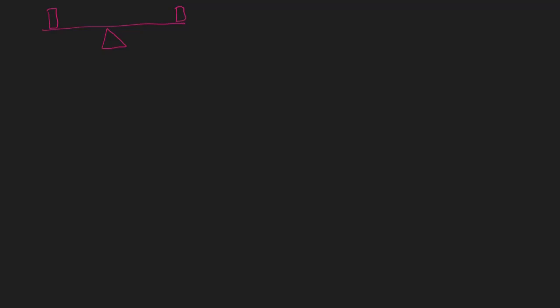Torque is essentially the force that causes something to rotate. For example, if a fan is rotating, that means the torque pushing it one way is greater than the torque the other way. The fan will only rotate if the torque is unbalanced. If the fan is not rotating, torque is balanced — same thing if the seesaw or lever is not rotating.